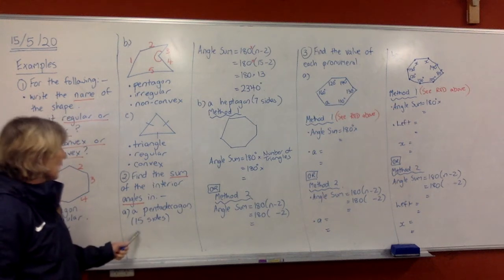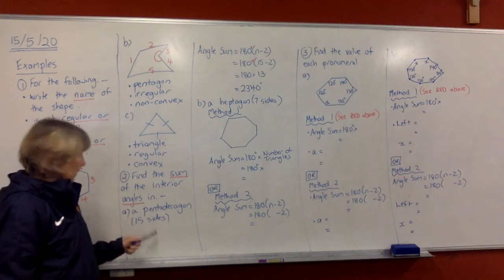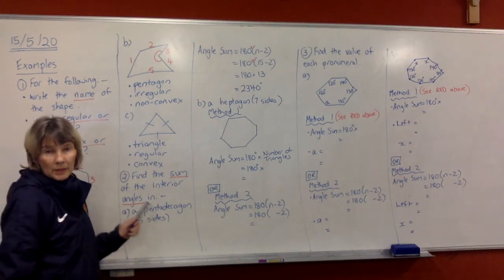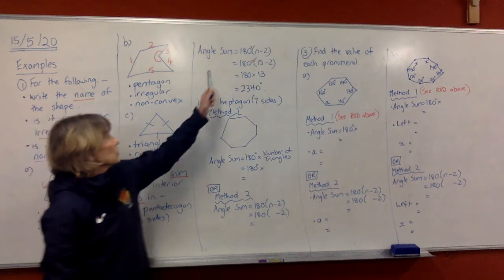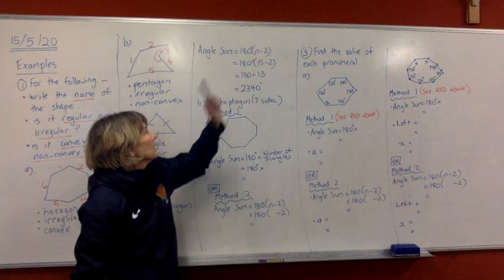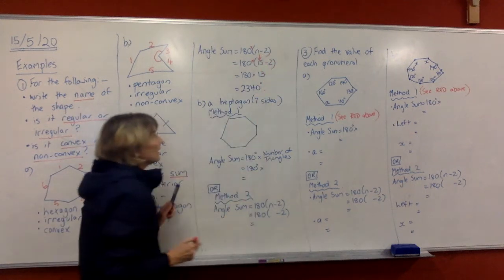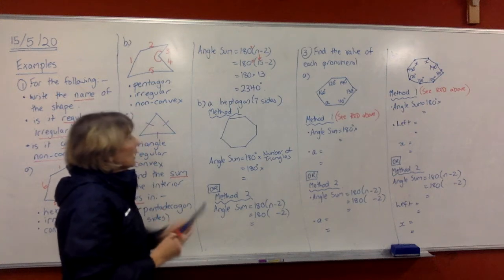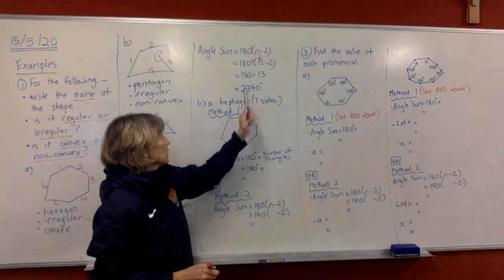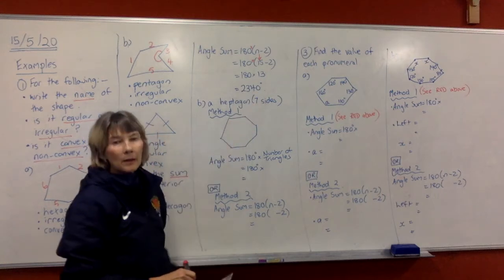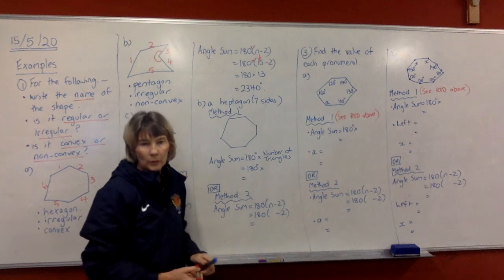So we're going to take our angle sum formula and do this one because I don't want to draw a diagram of 15 sides. It's going to take me ages to do that. So I'm going to use the second method and write the formula down for doing the angle sum. Now I'm just going to put the 15 sides in for N. Now 15 minus 2 is 13, and then we're going to multiply those with our calculator. So the angle sum of a pentadecagon is 2,340 degrees.